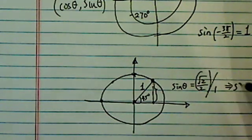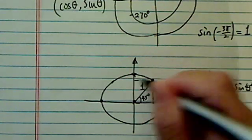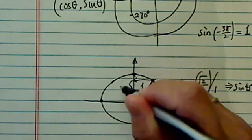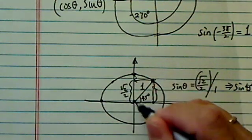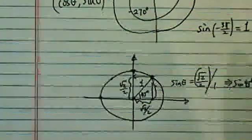So this one is sine of 45 degrees is radical 2 over 2. This one is the y value here. It's radical 2 over 2. X value here is radical 2 over 2 as well.